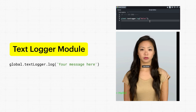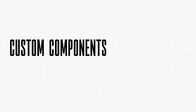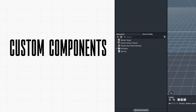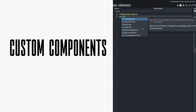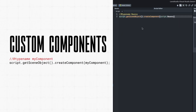It's easy to set up. You just need to include the Text Logger module in your script and call its log function, like so. Then, you'll see your log messages pop up directly in your Lens view. Custom components are another great feature for improving your workflow. If you find that you're often reusing the same scripts across multiple lenses, you can turn them into a custom component. This allows you to package them neatly and use them wherever you need, saving you time and keeping your scripts tidy. You do this by right-clicking the script and selecting Create custom component. This is to create an instance of a custom component at runtime, and then you can add it to any object with this code.